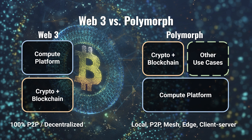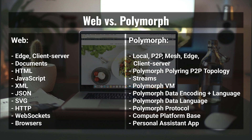Also, Web3 platforms tend to be 100% decentralized, whereas Polymorph is designed to be able to use any topology that suits the use case and the end user. Polymorph is also not a traditional web project. As stated at the beginning of this video, the purpose of Polymorph is to re-imagine personal computing — and that includes re-imagining the technologies used inside the platform. The Web is focused on client-server and possibly edge computing, whereas Polymorph is designed to serve local, peer-to-peer, mesh, edge, and client-server computing, and variances between these.